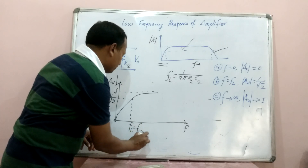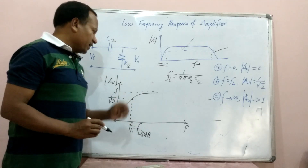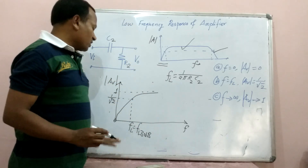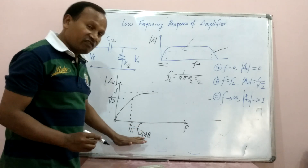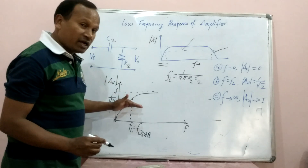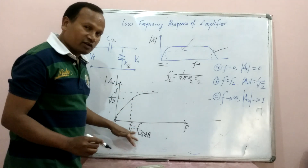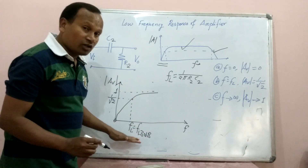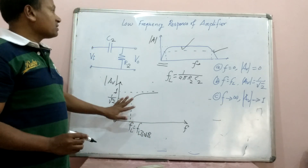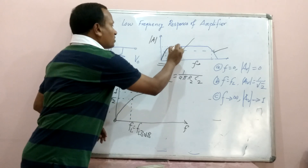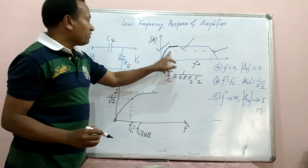As we discussed in the lecture related to high frequency response, this is called the 3 dB cutoff frequency because at that frequency the gain is reduced by 3 dB when converted to decibels. Since it is on the lower side, we call it the lower 3 dB cutoff frequency. And this is the response we can see here in the complete response of the amplifier at low frequency.